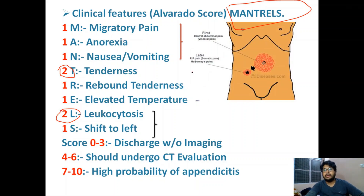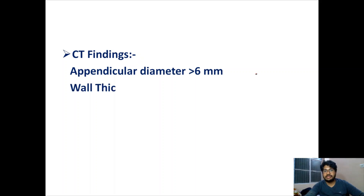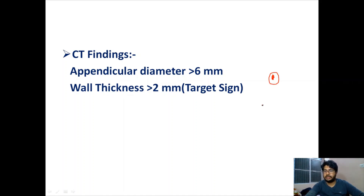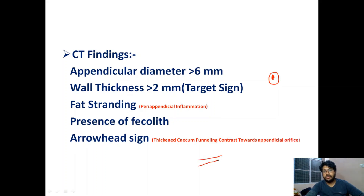The central abdominal pain shifts to the right iliac fossa. The first pain is visceral and the second is somatic. CT findings include: appendicular diameter more than 6 mm, wall thickness more than 2 mm leading to the target sign (a central dot with a surrounding circle), fat stranding due to periappendiceal inflammation, presence of fecalith, and the arrowhead sign — caused by cecal contrast funneling toward the appendiceal orifice.